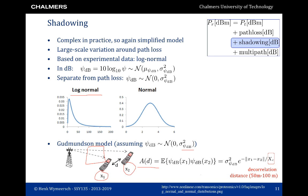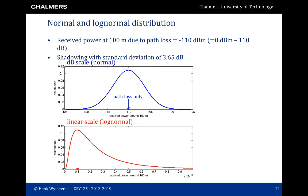Suppose there is a receiver 100 meters away from the transmitter and due to path loss the receive power is minus 110 dBm, with shadowing having a standard deviation of 3.65 dB in the dB domain. The receive power at 100 meters due to path loss alone would be minus 110 dBm. Due to shadowing, the received power is a variable with a Gaussian distribution in the dB domain — which corresponds to a log-normal distribution in linear scale, where the path-loss-only power would be 0.1 times 10^-10 watts. The key point is that the normal and log-normal distributions are very different.